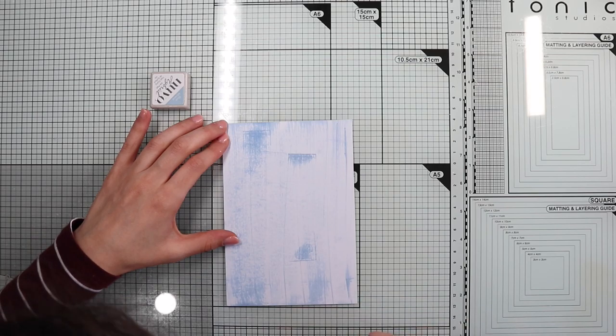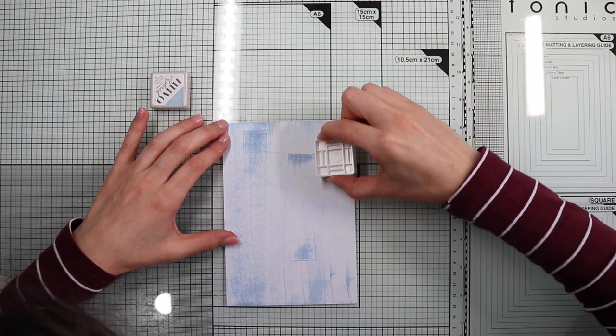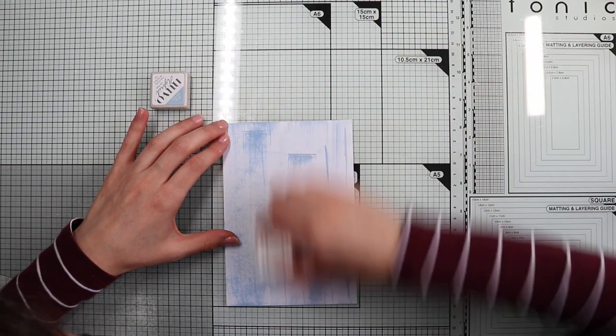To mark slightly thicker lines, rub only one edge of the ink pad.